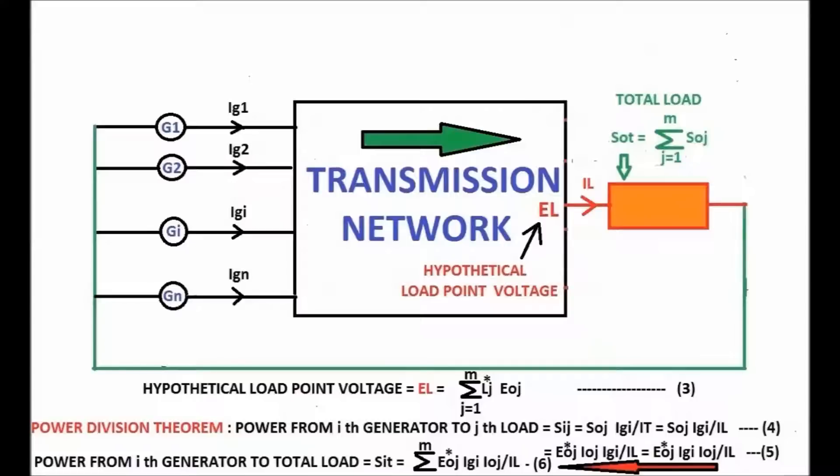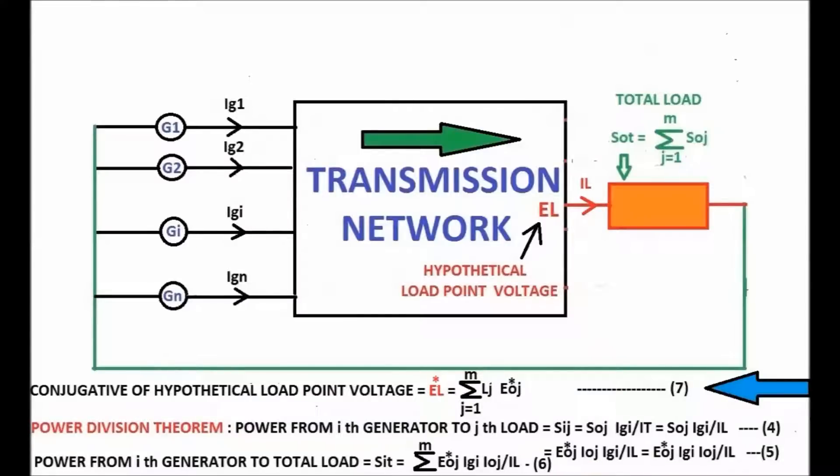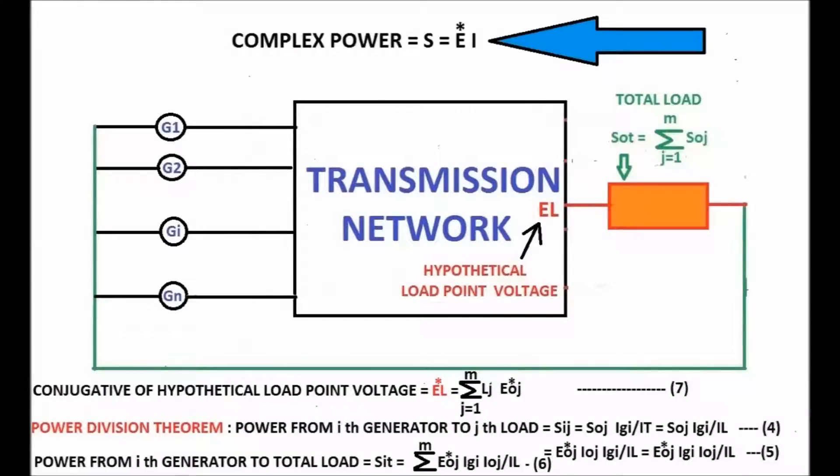Inspecting Equation 6 defines the complex conjugate of the hypothetical load point voltage EL in Equation 7. Since the complex power is expressed as Eoj in all the power division theorem derivation, we get the complex conjugate of EL in Equation 7.